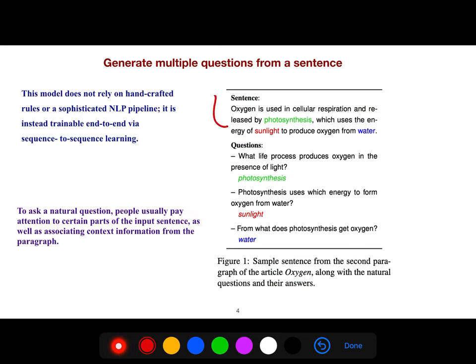So we have a sentence. We want to generate different questions. For example, if attention is on photosynthesis, then this question is generated. If attention is on sunlight, then this question is generated. If attention is on water, then this attention. So we have three questions that you can generate from this sentence.